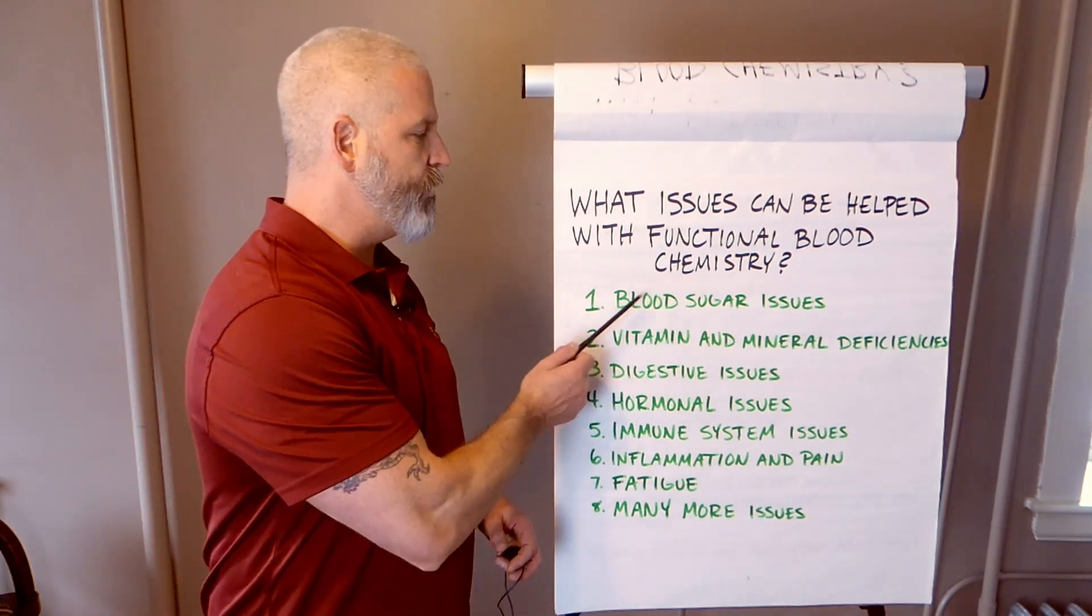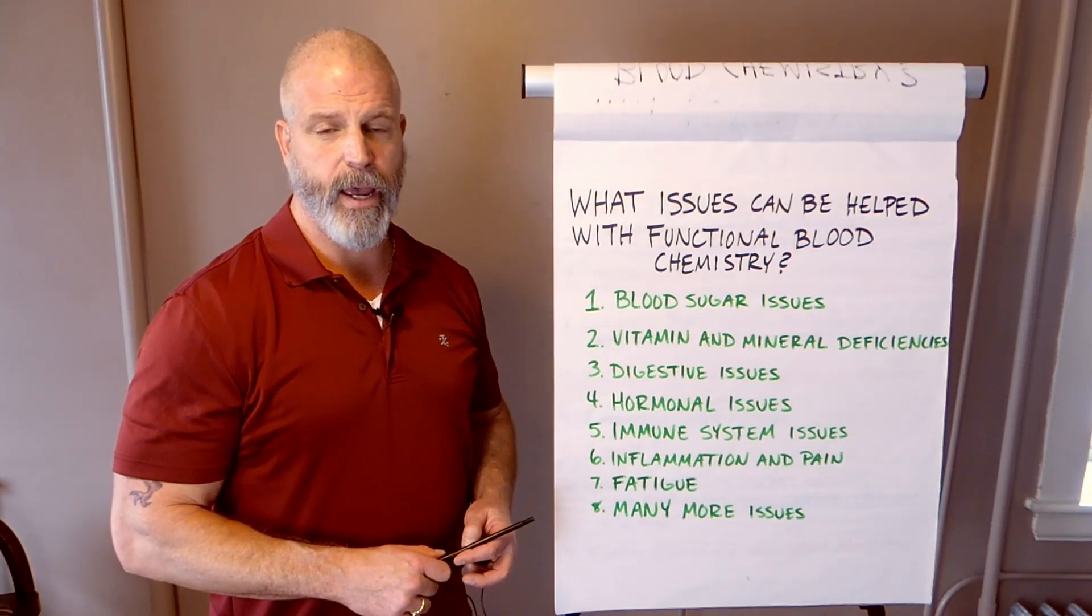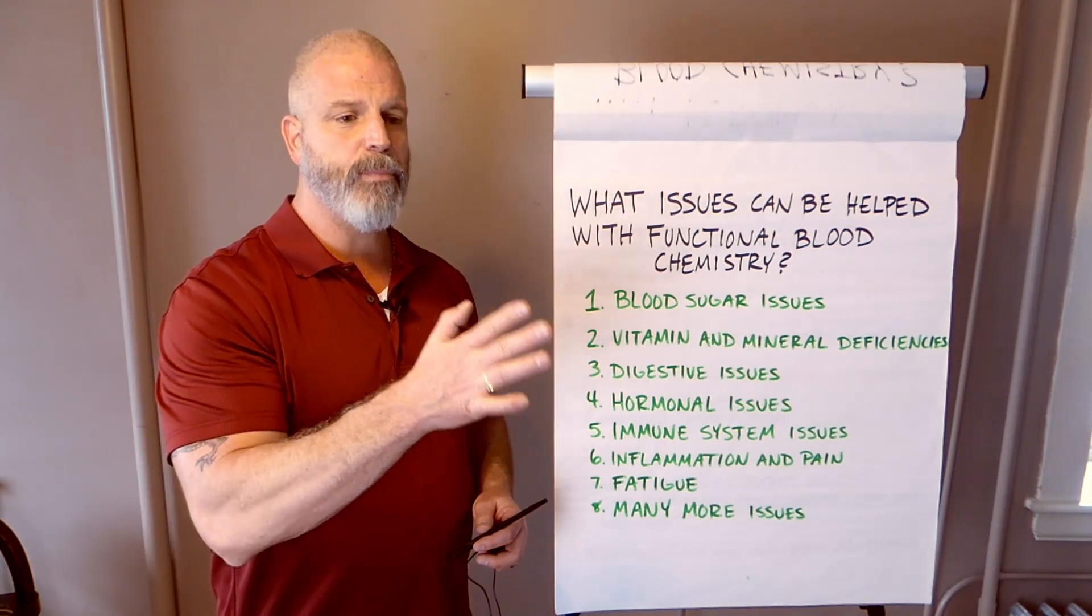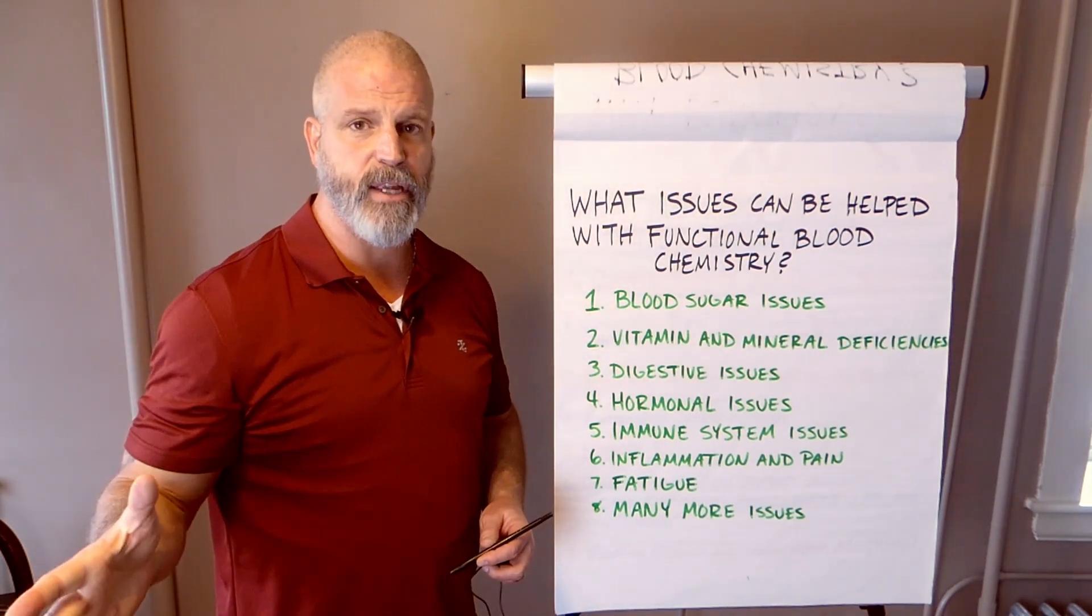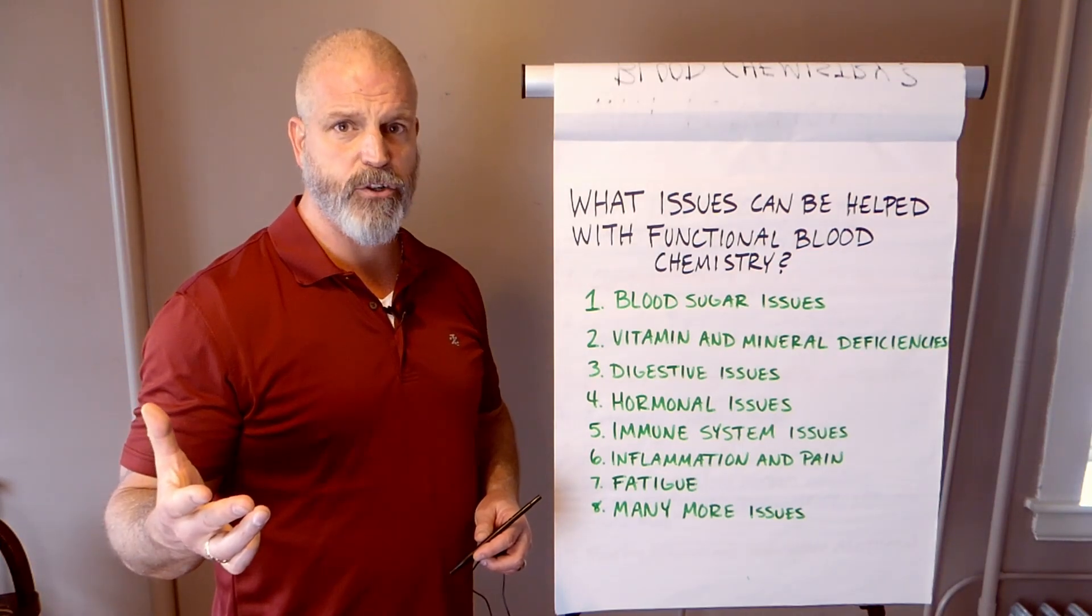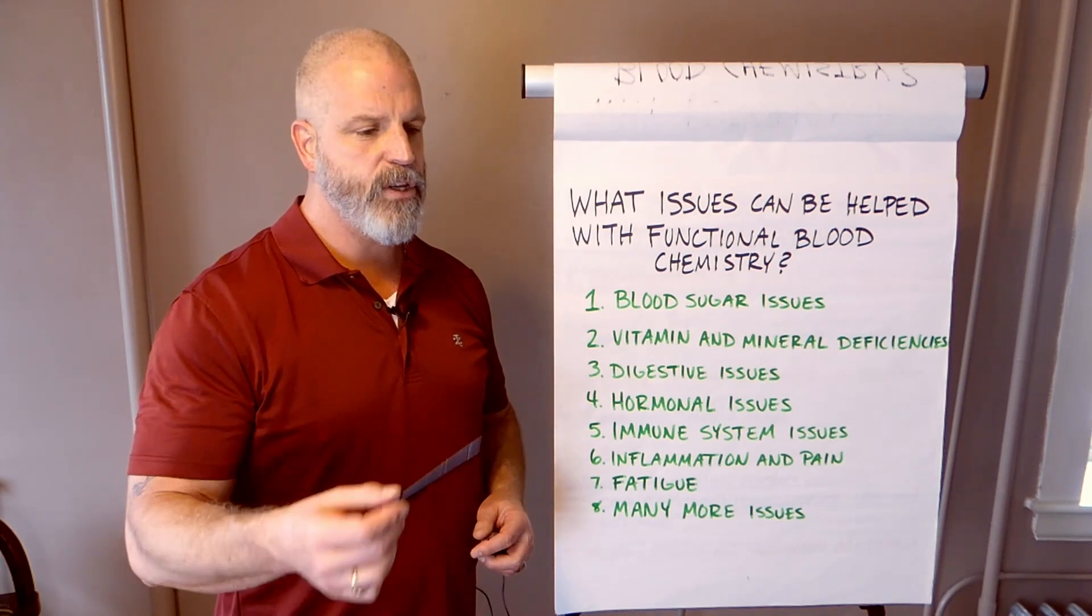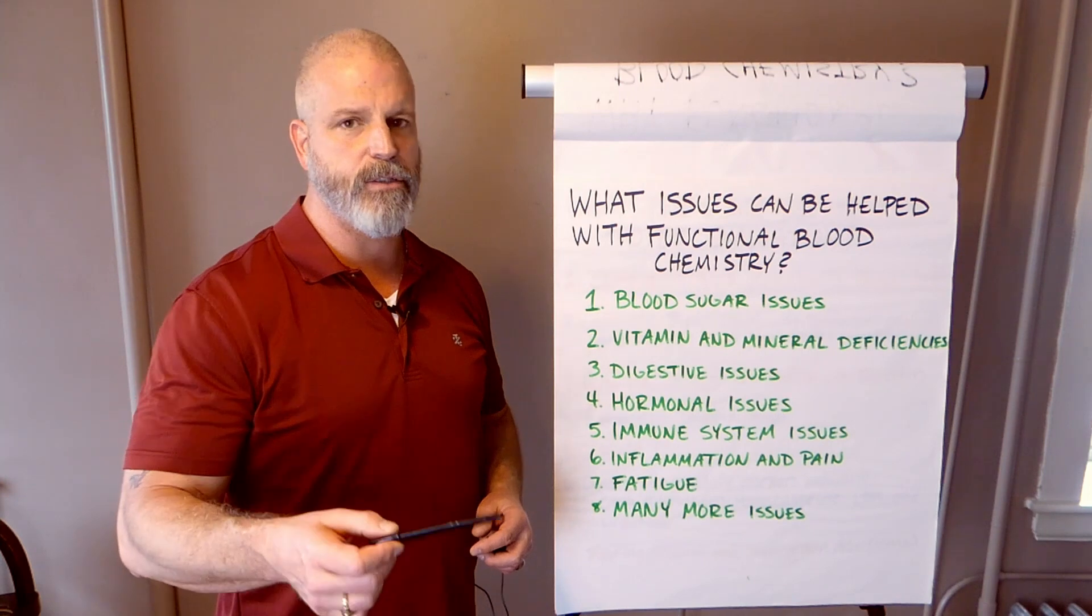So the number one thing that we can help are blood sugar issues. A lot of people think blood sugar issues means this person has diabetes. But before you develop diabetes, you actually start to get blood sugar issues. This can be called metabolic syndrome, syndrome X, prediabetes, or insulin resistance.